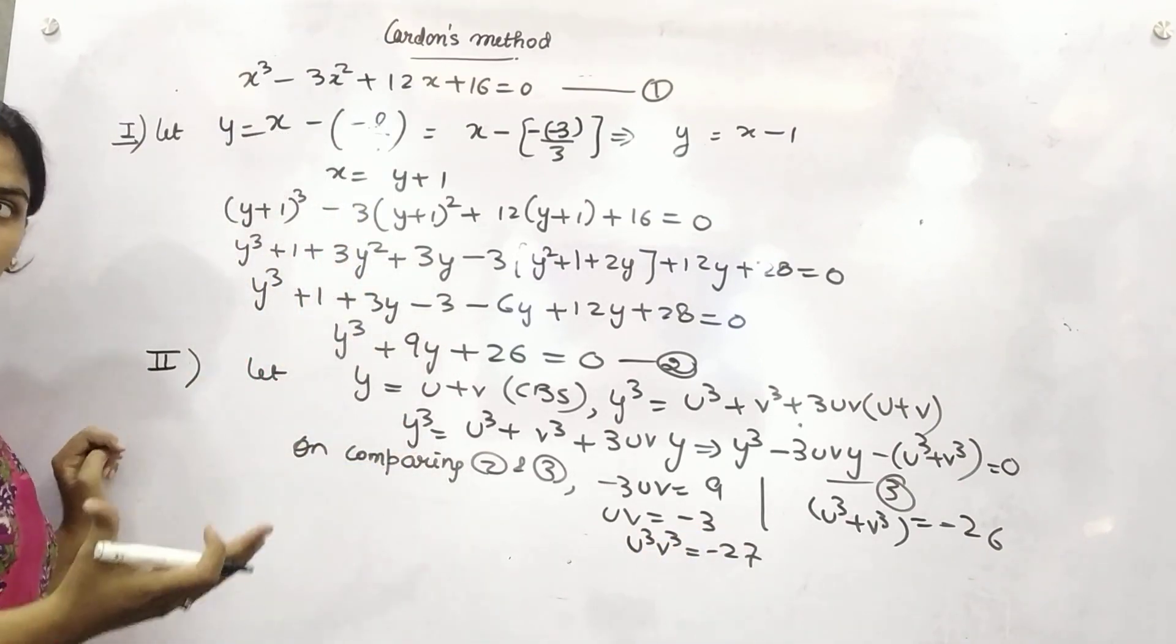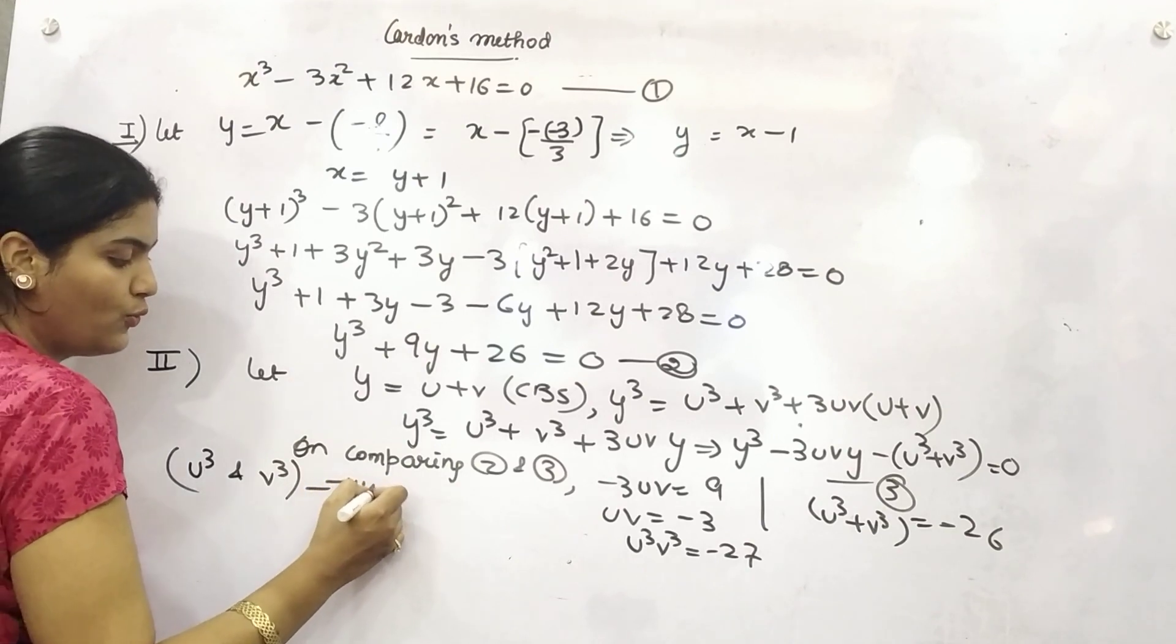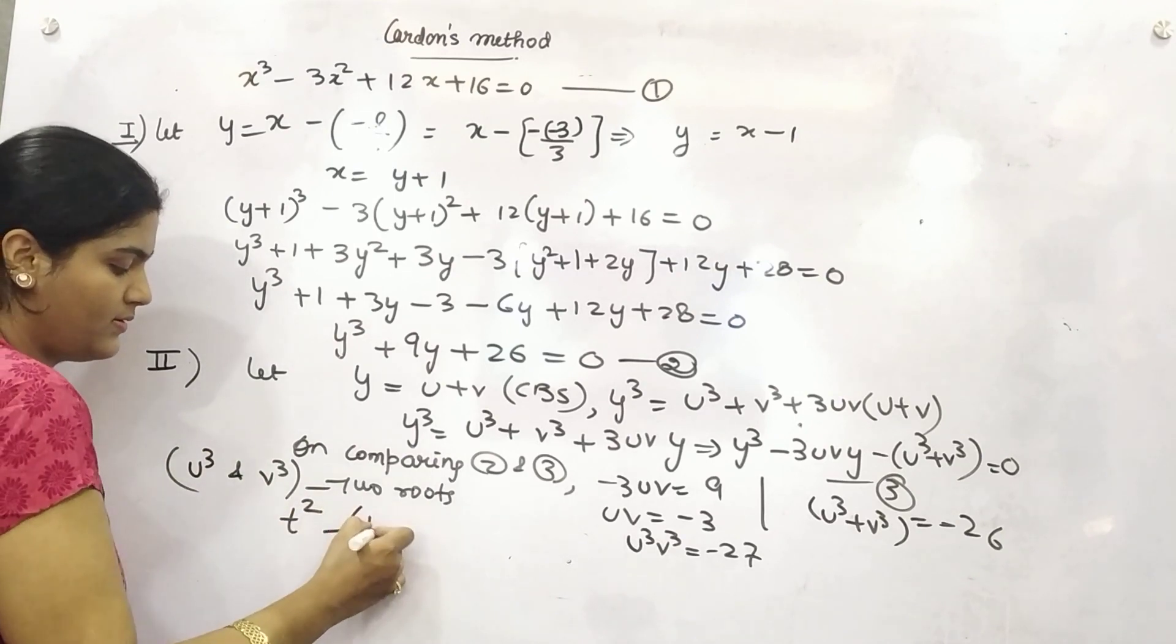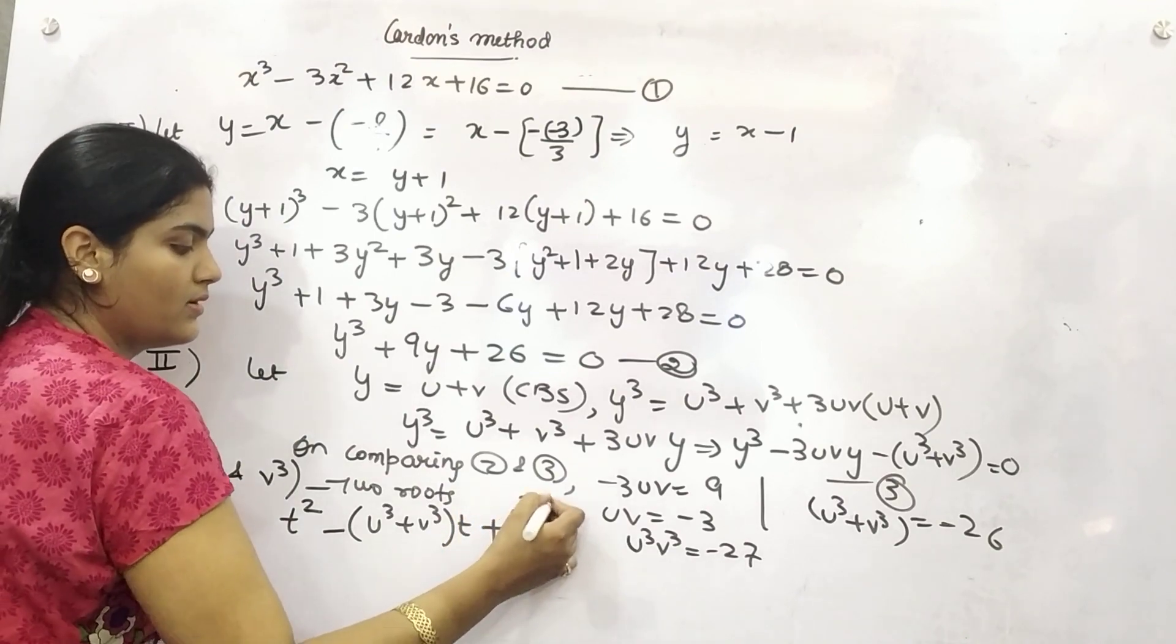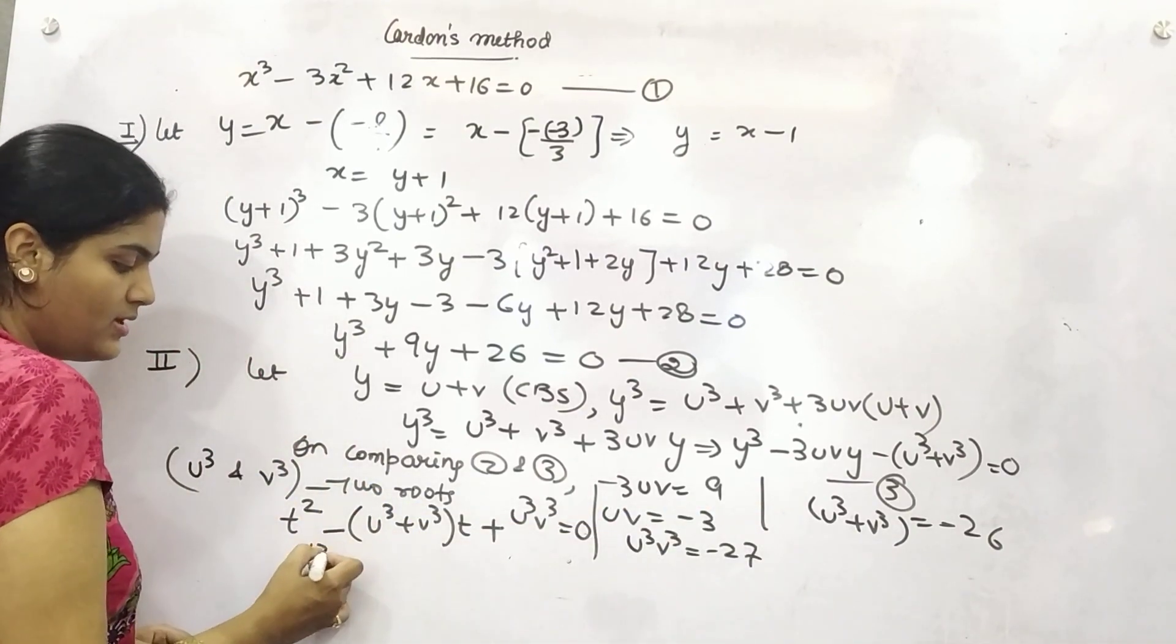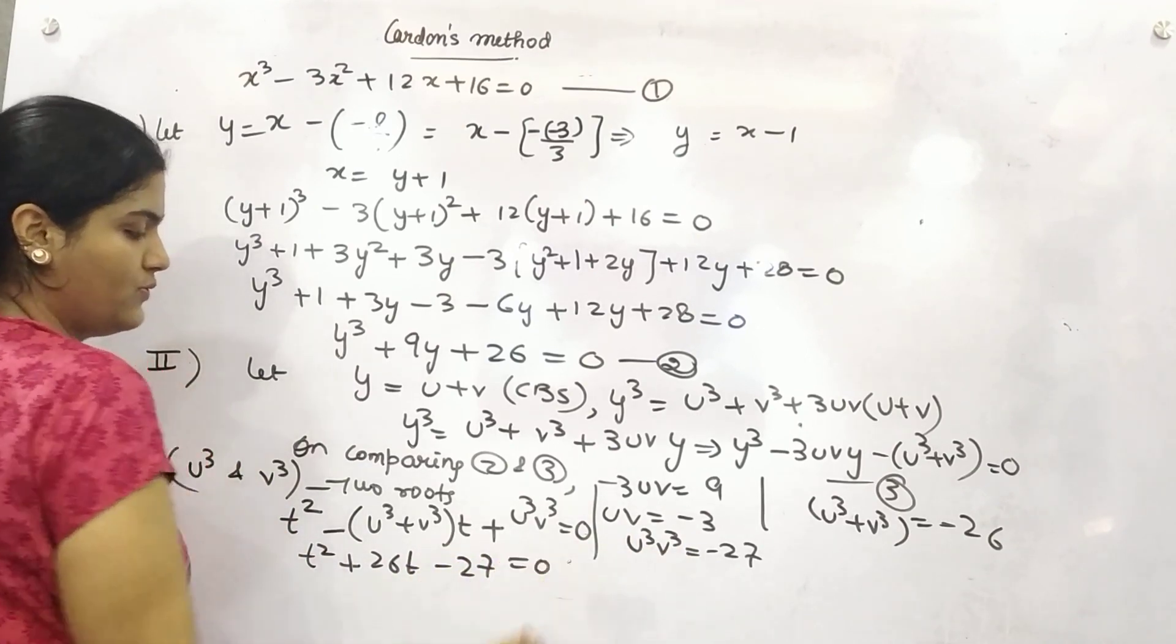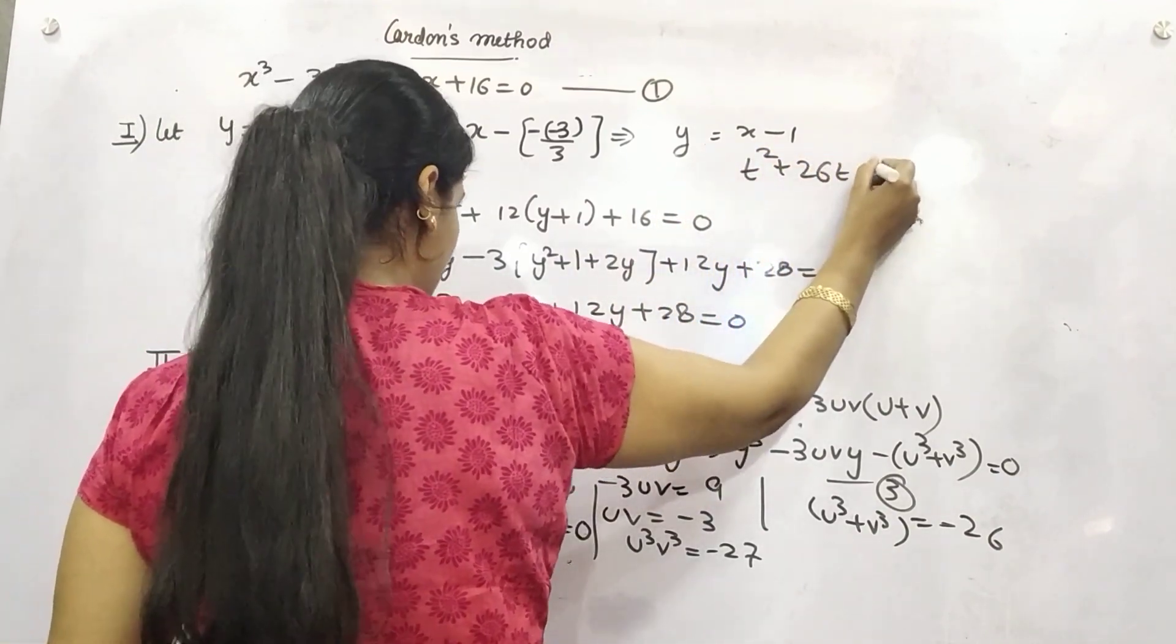Now you need to form an equation whose roots are u cube and v cube. These are two roots of that particular equation. So how can we make that equation? That equation will be variable square minus sum of roots into variable plus product of roots equals 0. Now if you put the values down here. t square minus this. This is minus 26. So minus minus plus 26. This is minus 27 equals 0. So your equation, your quadratic equation is t square plus 26t minus 27 equals 0.